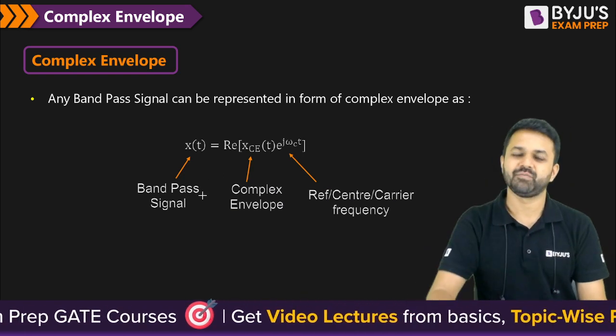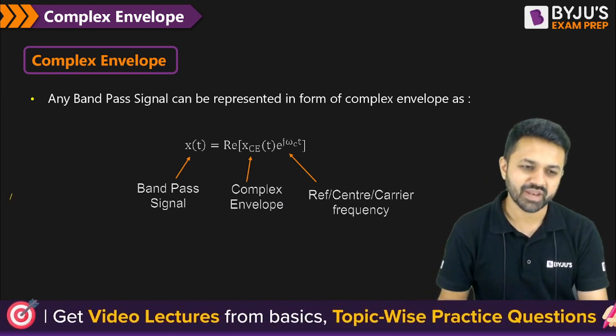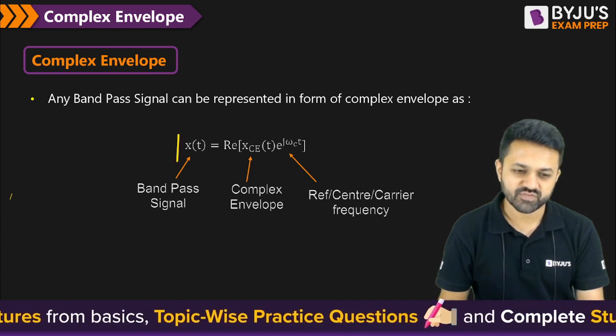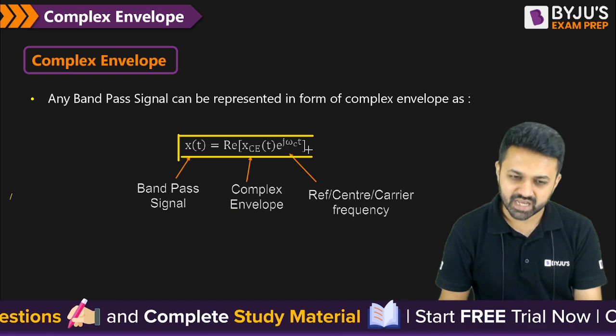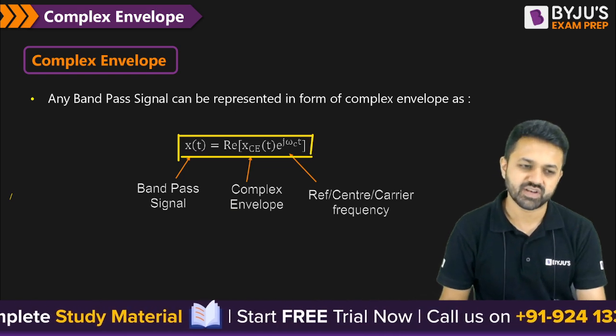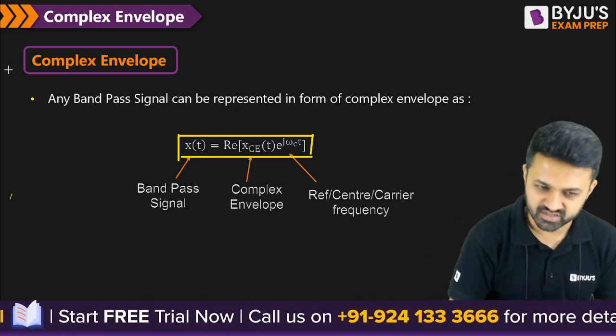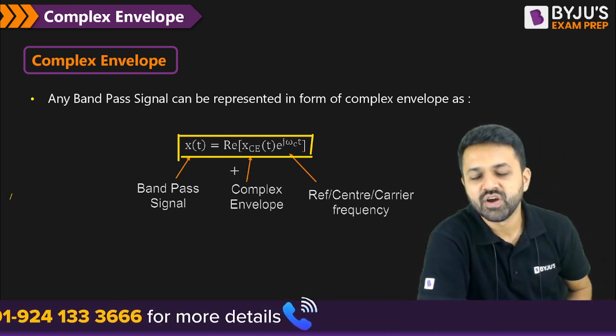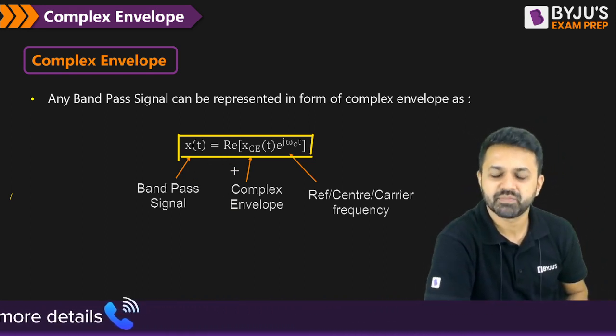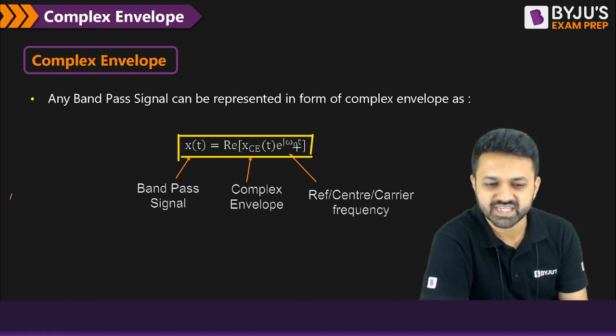So in the similar way, I am giving you the second method also to write the complex envelope. That is x(t), if you have any bandpass signal, then bandpass signal can be represented in terms of complex envelope. If you write it in terms of complex envelope, like real part of complex envelope of the signal multiplied with e^(jωc·t).